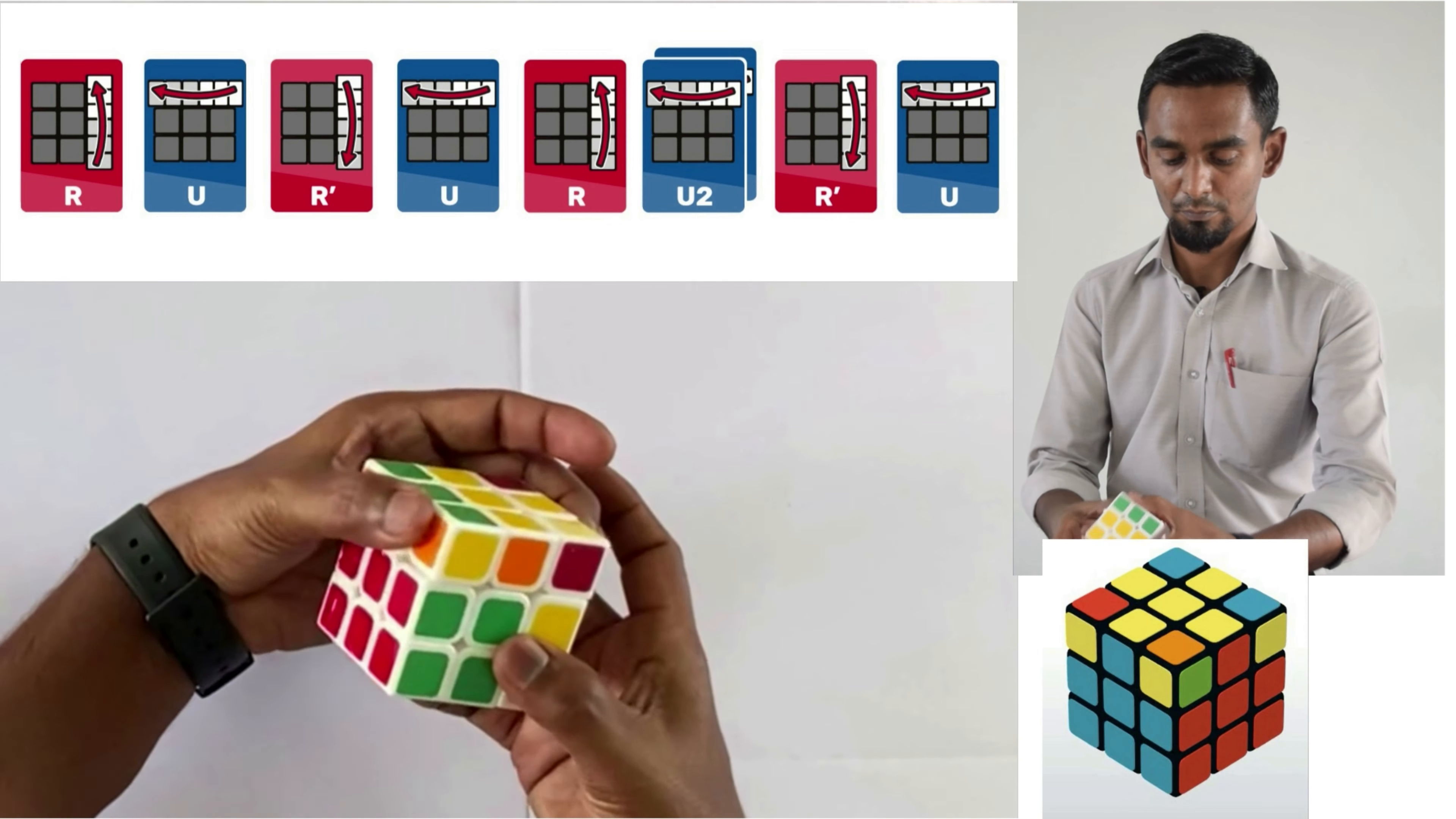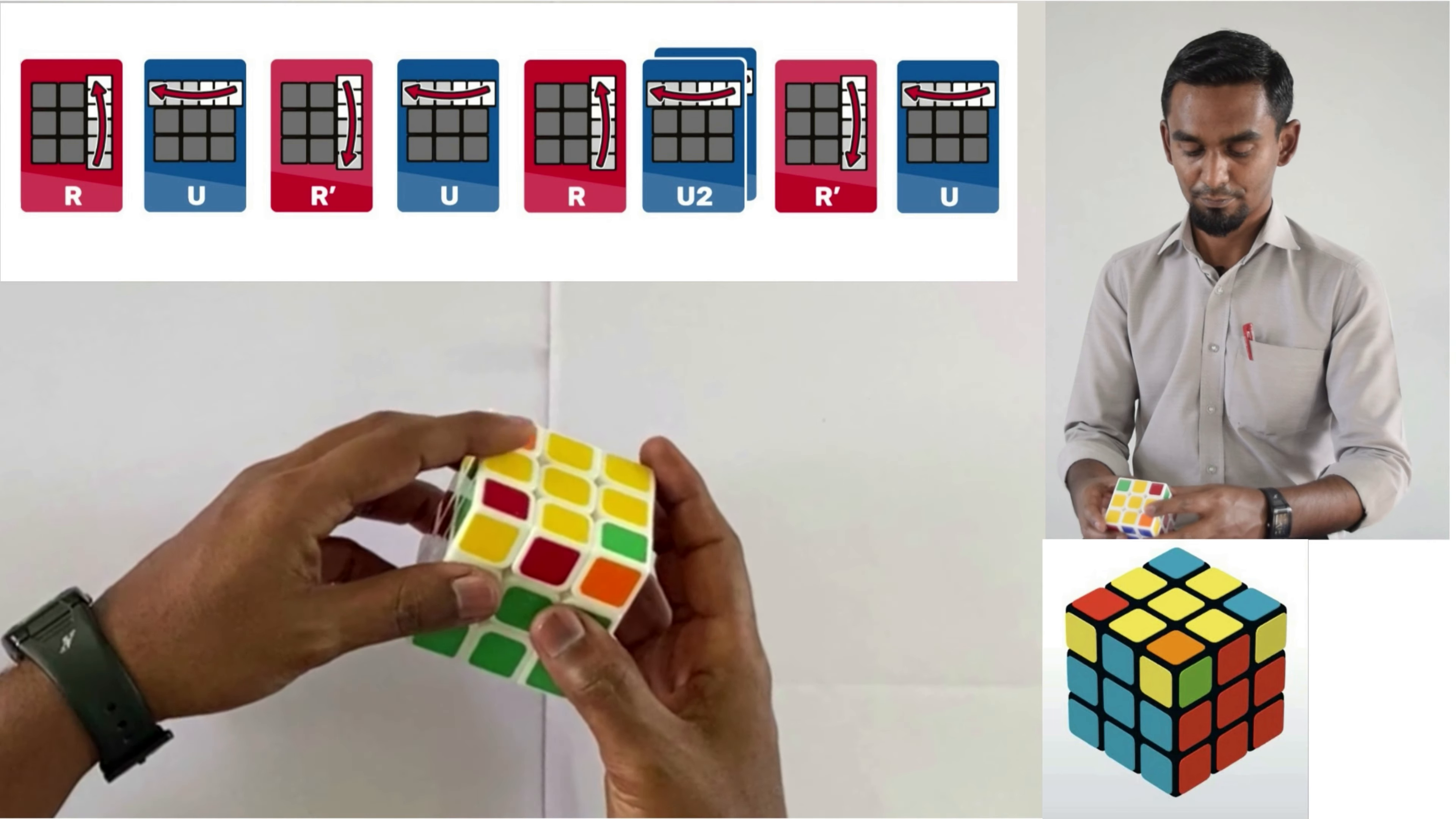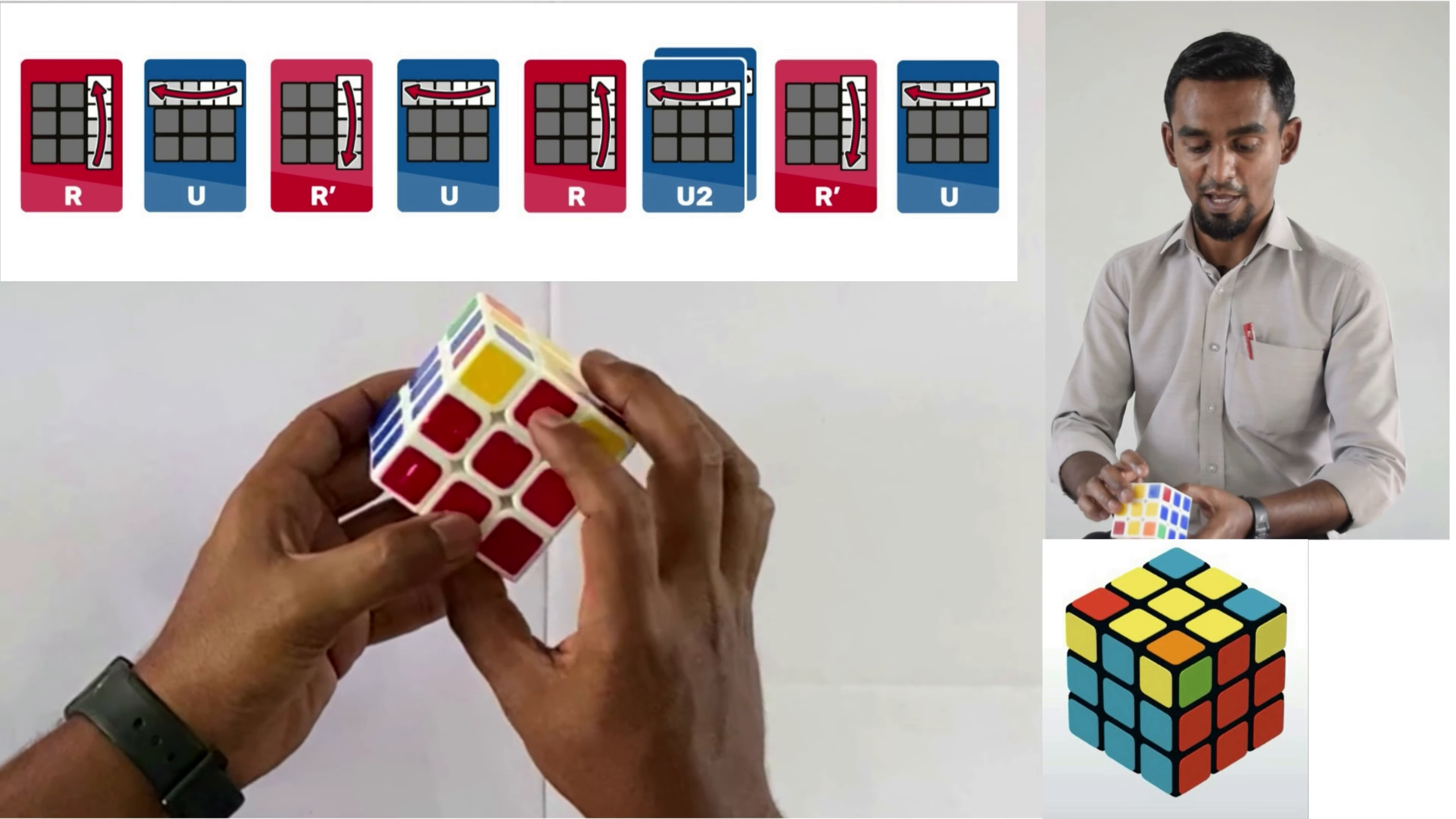I am applying the formula now. I've done it twice and now I'm going to do it again. Wow, you see now the green is perfectly matched, orange is perfectly matched, blue is perfectly matched, and red is also perfectly matched.